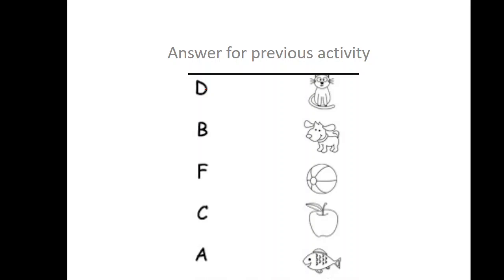Then you identify the picture for each letter. The first letter is D. D is for the dog. Then you draw D for dog. And letter B. B is for ball.